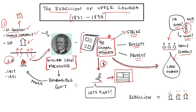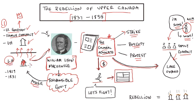Back in Canada, William Lyon Mackenzie advocated for something called responsible government. He wanted more power given to the lower house — after all, they were elected, and shouldn't the will of the people govern the colonies? He was appointed to the lower house in 1829 and 1831.